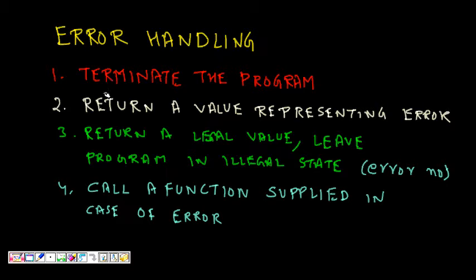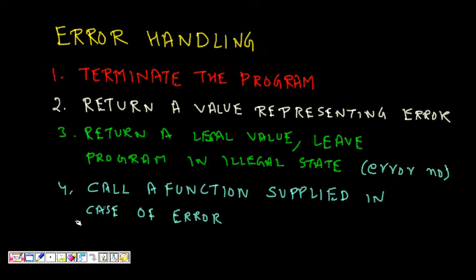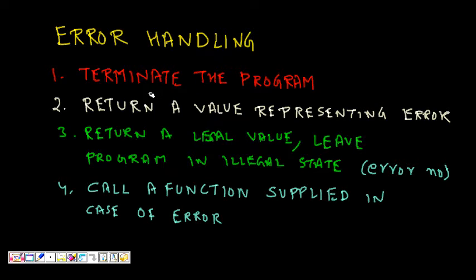So what are the usual error handling approaches? First, a program can simply terminate when it gets an error. But that means there will be no further possibility of handling the error — you have just terminated the program.